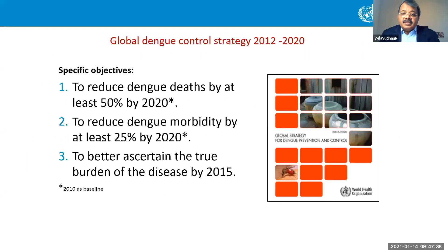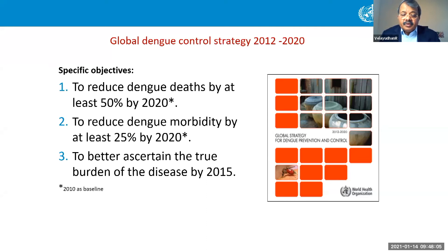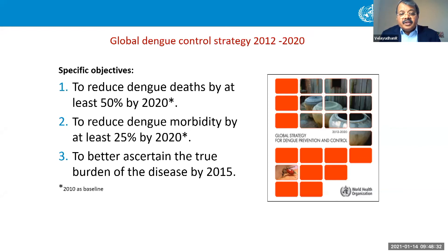The WHO dengue control strategy document from 2012 to 2020 had goals to reduce dengue deaths by 50% — with limited success, achieving around 30–35% reduction — and to reduce dengue morbidity by 25%, which was not achieved as reporting significantly improved during this period. The third objective, ascertaining the true burden of the disease, was fully achieved at 100% thanks to the toolkit and IHME's yearly global assessments.